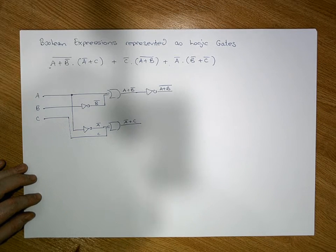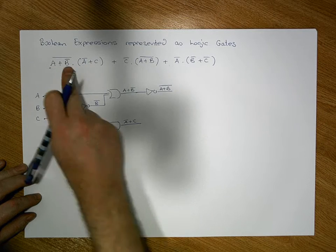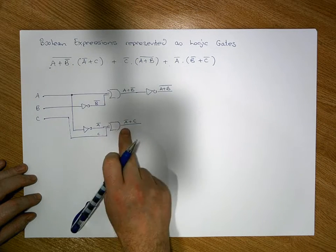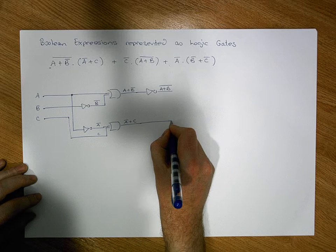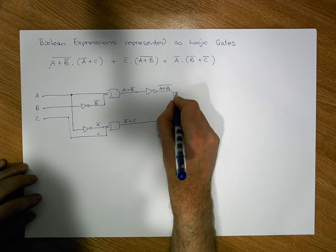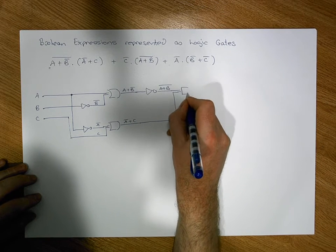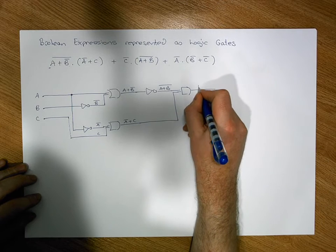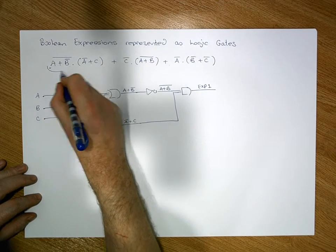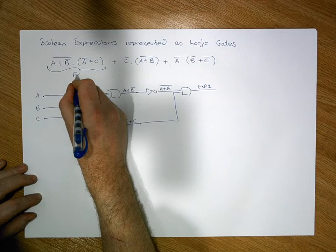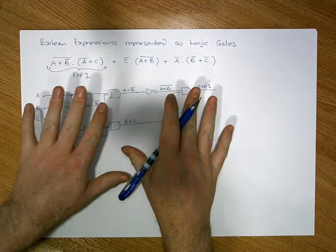What we get out is A-bar OR C. Now we have the two operands — the left operand and the right operand — and we can pass them into an AND gate. This gives us Expression 1, and this is the circuit to represent Expression 1.